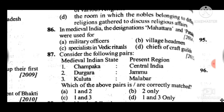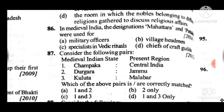Question 87: Consider the following pairs — medieval Indian state and present region. Answer to question 87 is B: only pair 2, Durgara – Jammu, is correct. The rest are incorrectly matched.